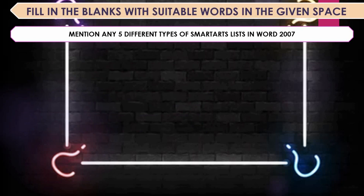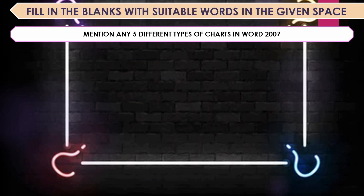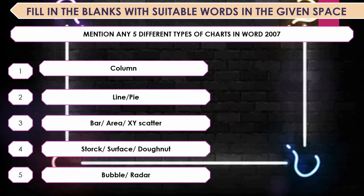Mention any five different types of SmartArt in Word 2007. The answers include: List, Cycle, Hierarchy, Matrix, Pyramid, Relationship, and Process. Mention any five different types of charts in Word 2007 — there are 11 types: Column, Line, Pie, Bar, Area, XY Scatter, Stock, Surface, Doughnut, Bubble, and Radar.